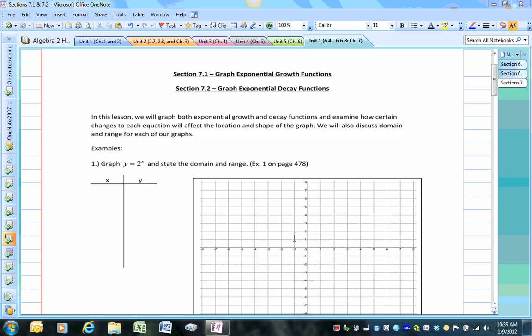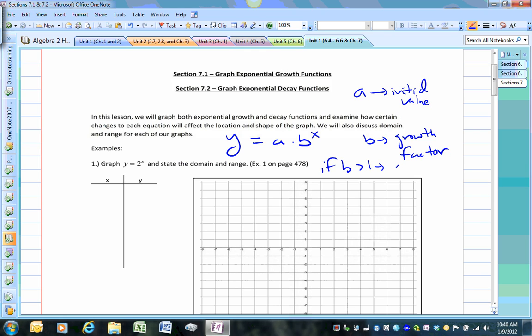Let's start with number one. So the general formula for most exponential functions is this, where A represents the initial value, and B represents the growth slash decay factor. It all depends on the value of B. If B is greater than 1, we are going to have a growth function.